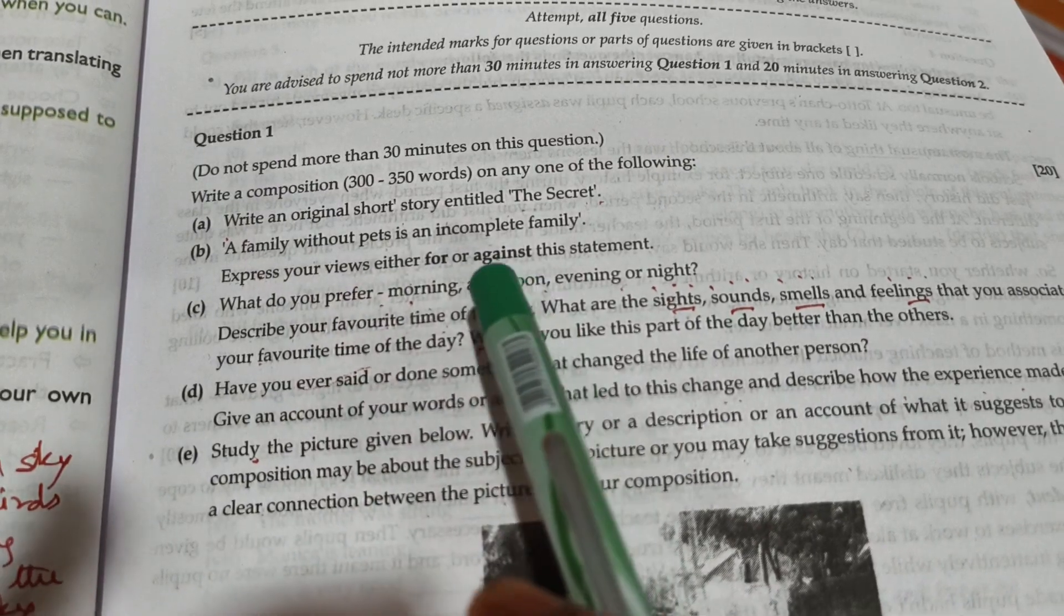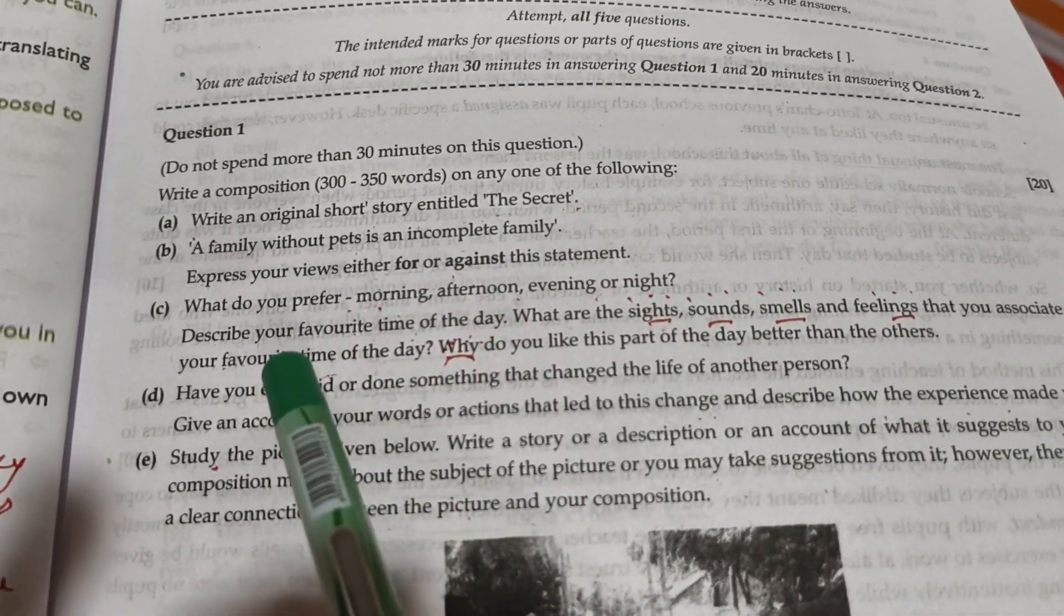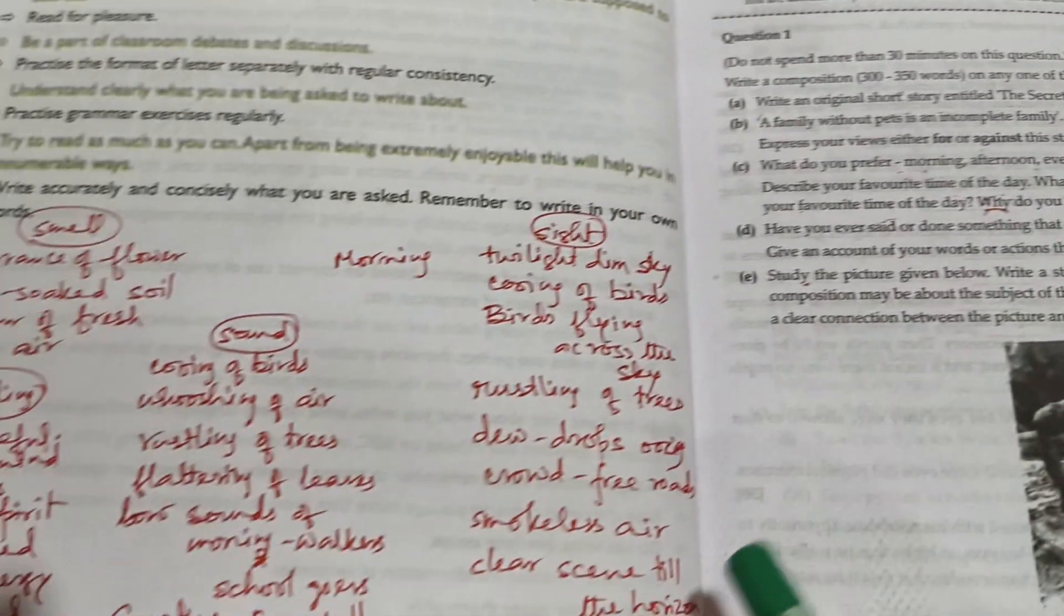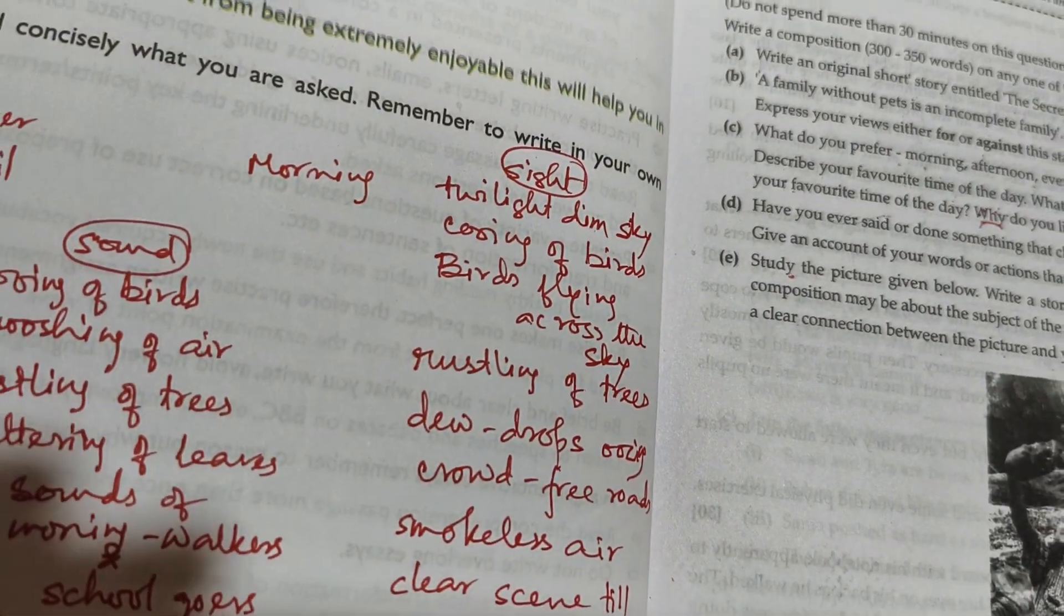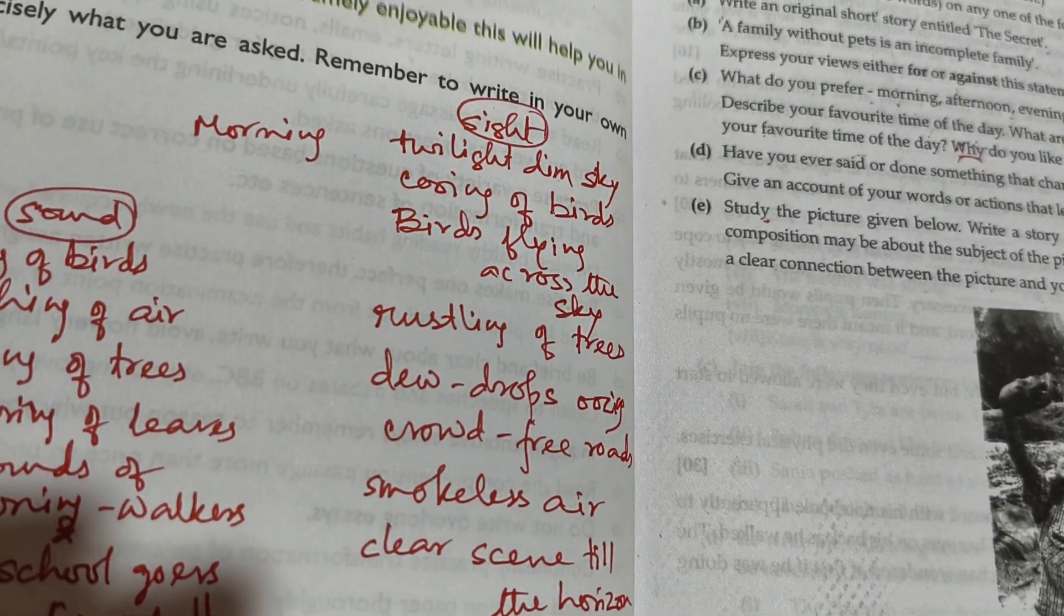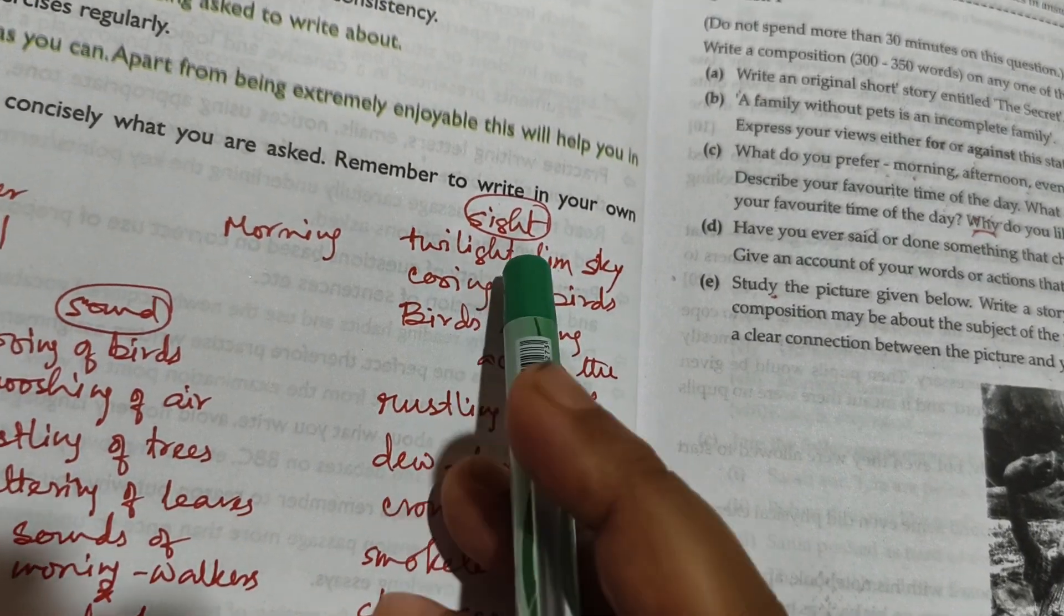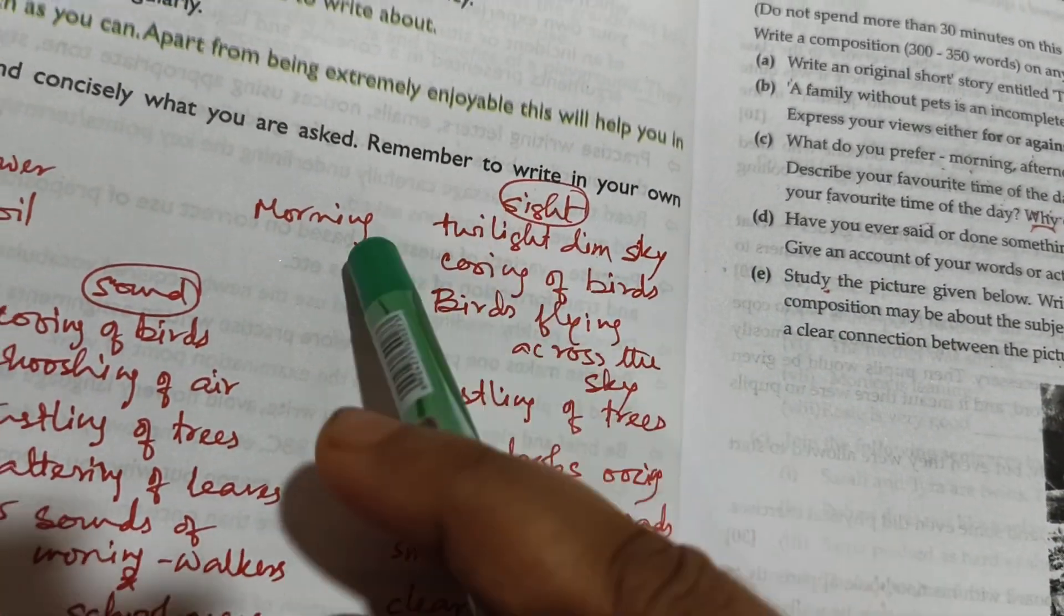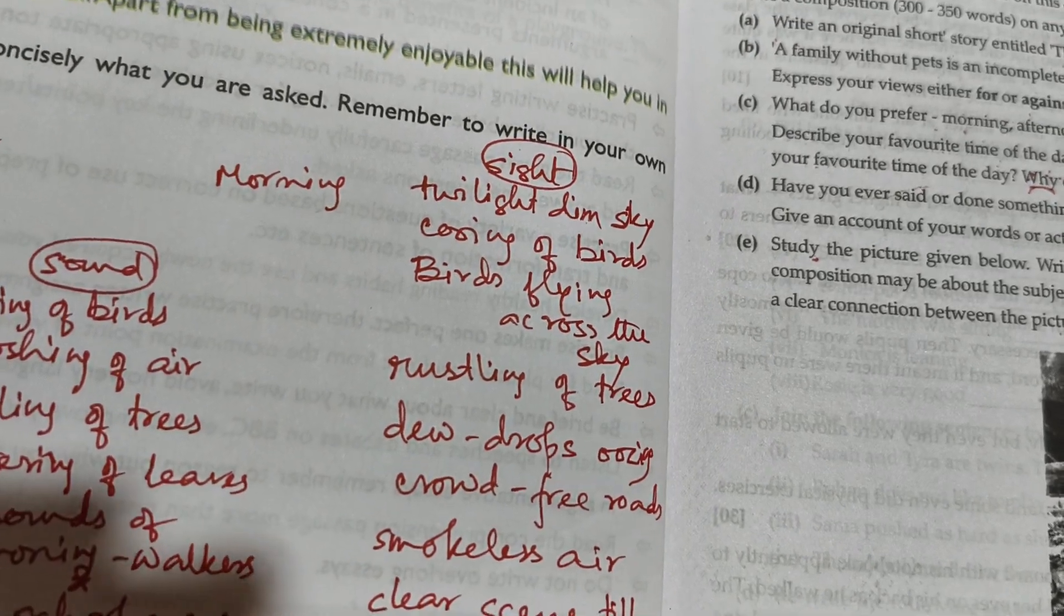I normally prefer morning. Describe the favorite time of the day. I normally prefer morning. Morning is the most favorite time of the day as per my own son. The sights which attract, the sights of the morning which make it one of my favorites. Twilight dim sky of the dawn.